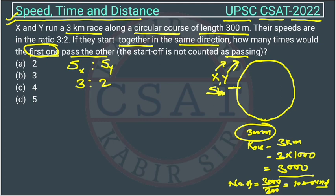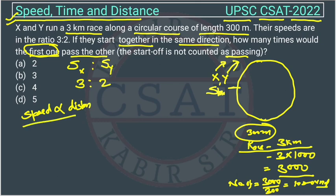How many times will they meet, or one pass the other, in a race of 3 kilometers? We know that speed is directly proportional to distance when time is constant, so their distances will also be in the ratio of their speeds: 3 is to 2.